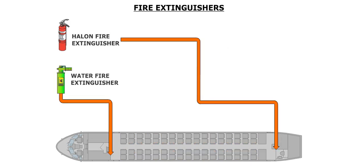There are two portable fire extinguishers located in the cabin. There is a water fire extinguisher located near the front of the cabin, on the left side, next to the emergency exit. A halon fire extinguisher is located next to the rear cabin crew station.